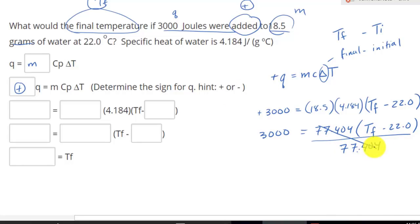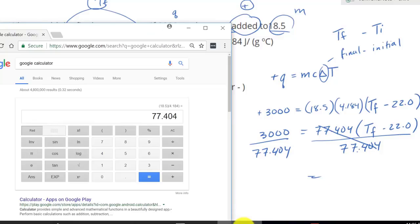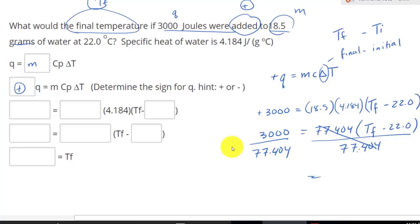Notice how this is multiplication. So now we can actually divide by 77.404. This would simplify equal to 1. And if we do that side, we would do the same thing to this side. 77.404. And what do we have? And this turned out to be 38.75 or 38.76.